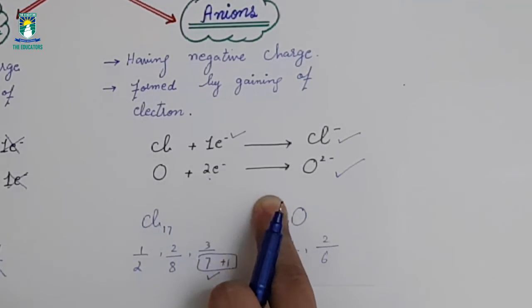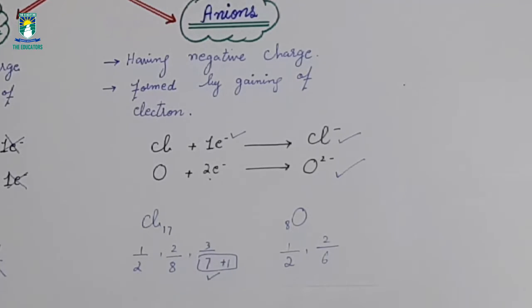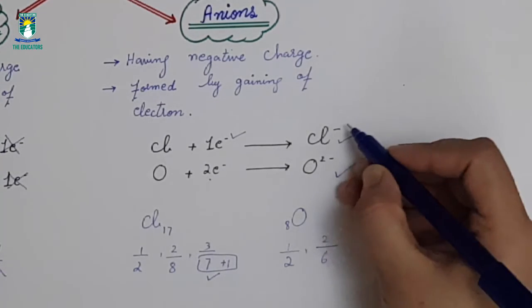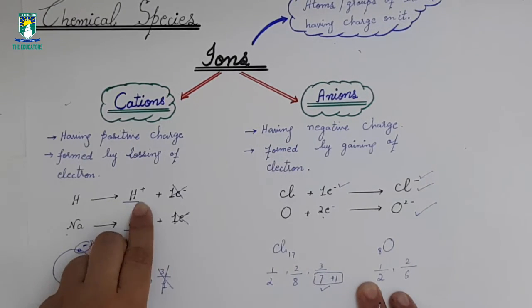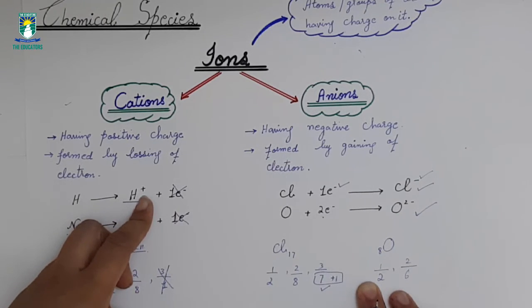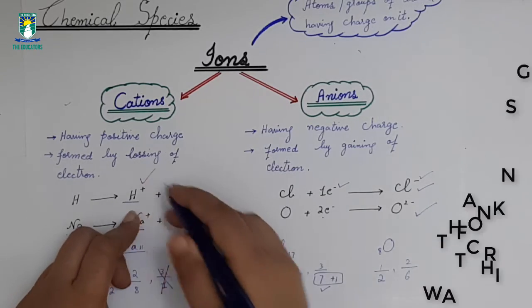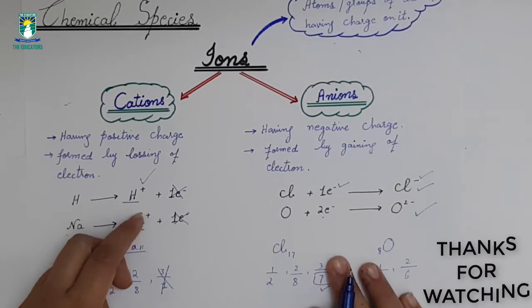When we have an element, the same number of electrons and protons. When electron enters the atom, which is negative, it becomes negative because the electrons are more. If we remove the electron from the atom, then it is positive because electrons are less than protons.